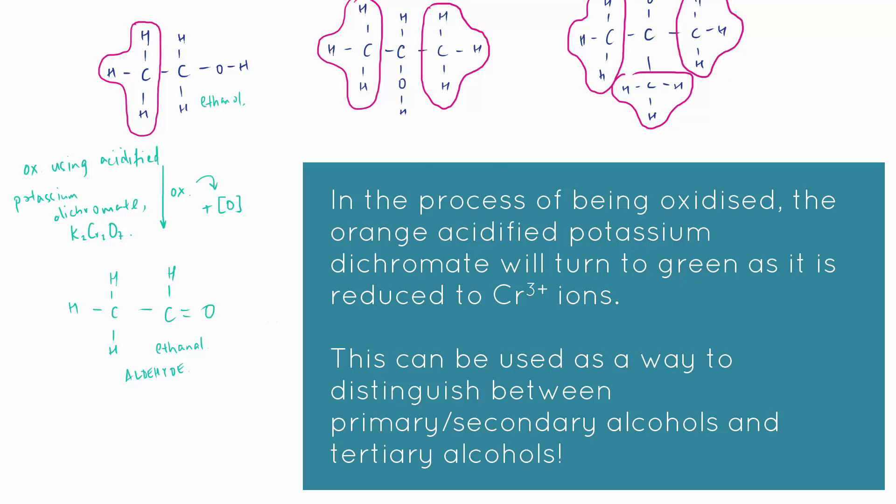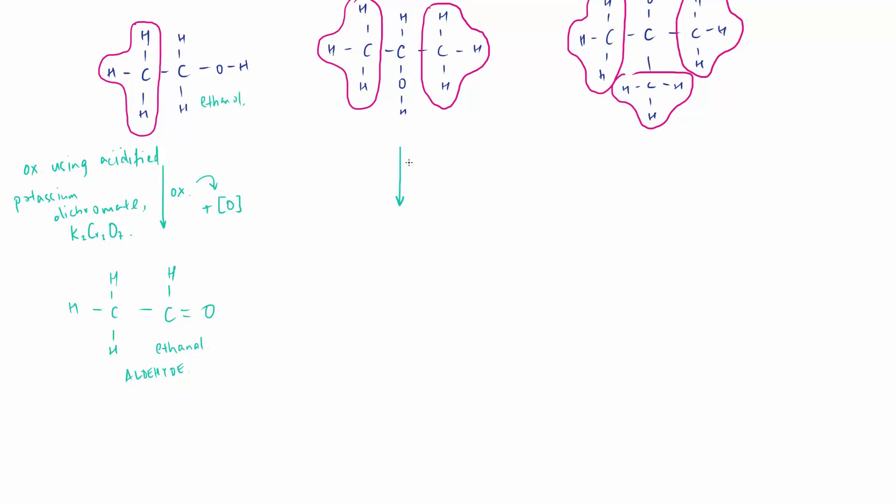We turn our alcohol, ethanol, into ethanal. And this is an aldehyde. Let's look at this one here now. Oxidation - what can we do? Same process as before, acidified potassium dichromate. Same process - we lose the hydrogens, oxygen comes from the oxidizing agent. And look at that, now we have a ketone. This is propanone, and that is a ketone.